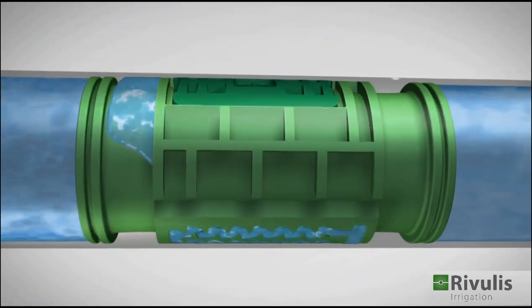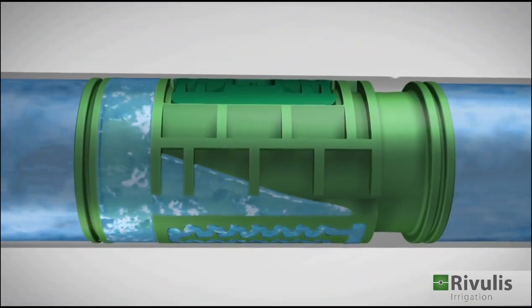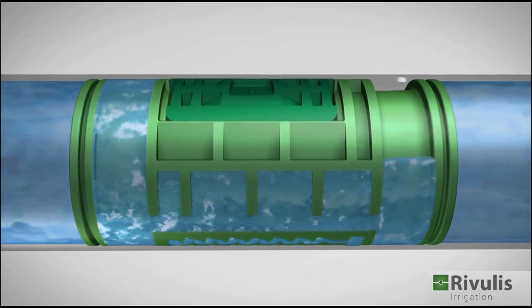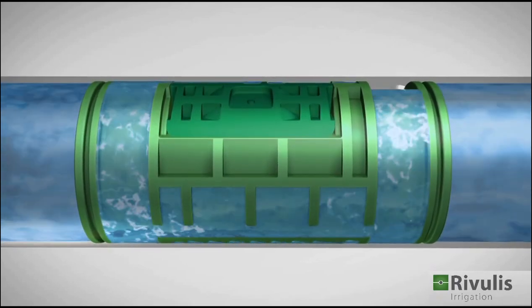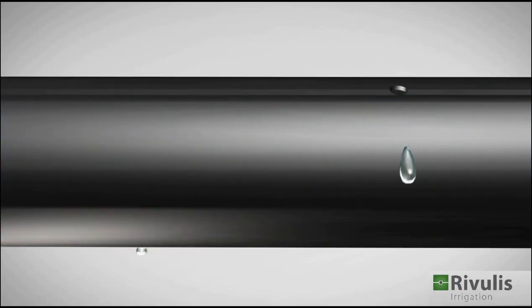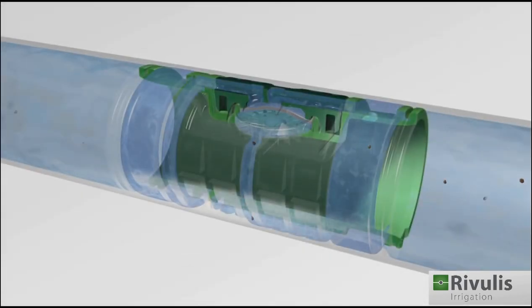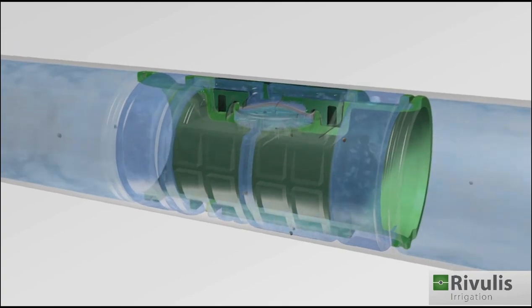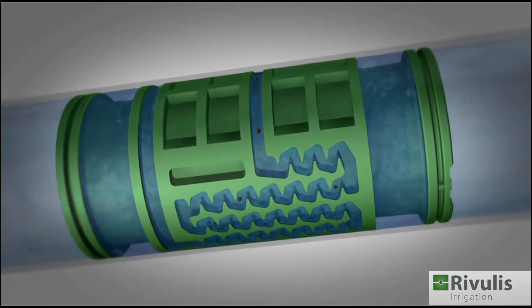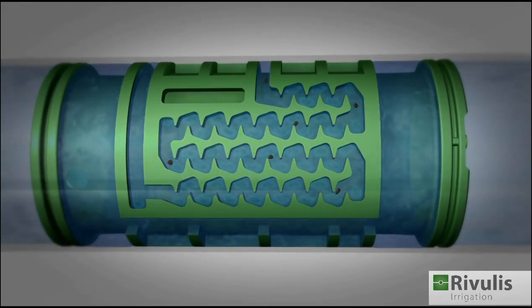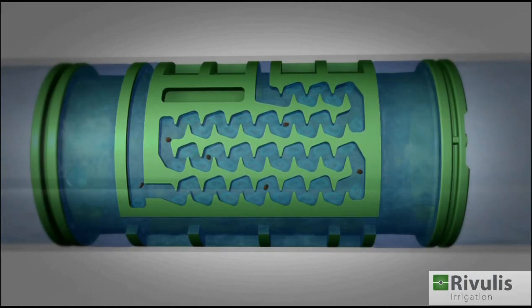The water continues to the outlet chambers and from there to the ground through two drip holes. Irrigation water usually contains dirt particles. The inlet filter only enables small particles to pass through the turbulent water flowing through.